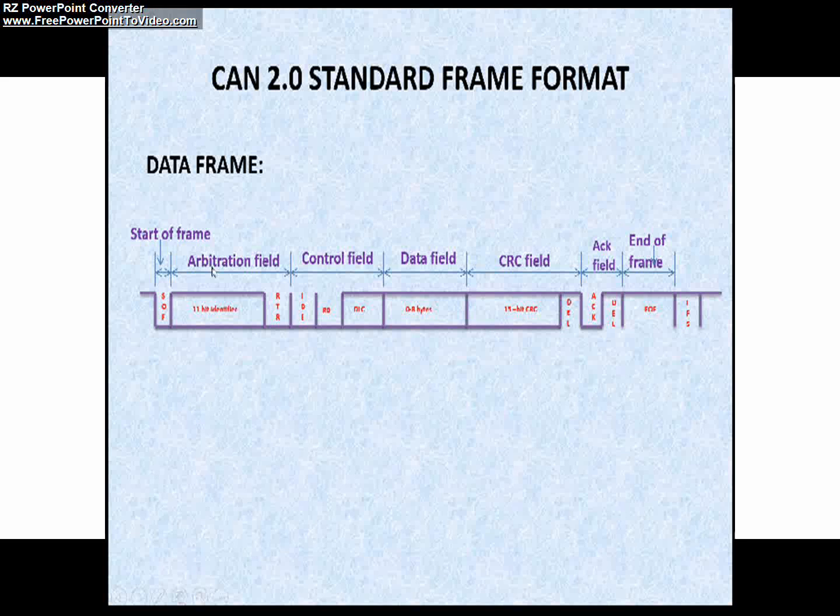Start of Frame field and Arbitration field, Control field, Data field, CRC field, ACK field and Acknowledgement field, and End of Frame. Now let's understand the purpose of each field.